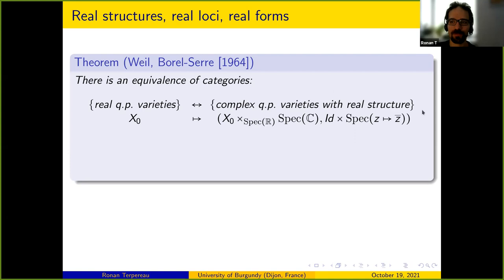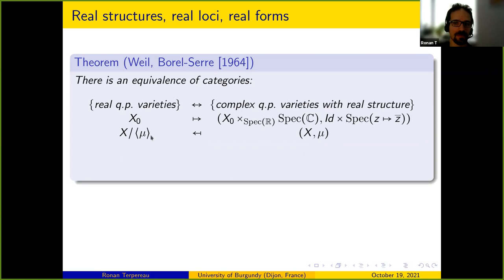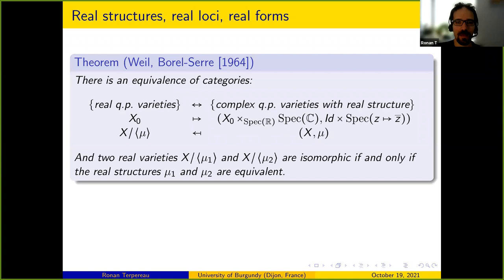In the other direction, if you start with a complex variety with a real structure mu, you can think of mu as a Z/2Z group action on X since it's an involution. You can then do the quotient, which in general is an algebraic space, but when working in the category of quasi-projective varieties the quotient is a real variety.